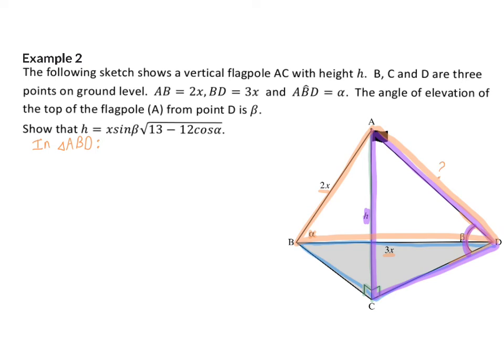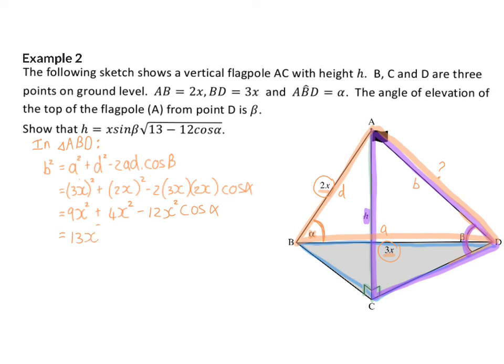In triangle ABD, we have two sides and the included angle. So, we are going to work with the cos rule. And now we can substitute in what we know, and then we can simplify. So, we're going to square the first two terms and multiply out the third term. And now a bit of algebra, where we add up like terms.